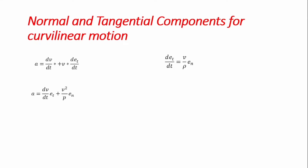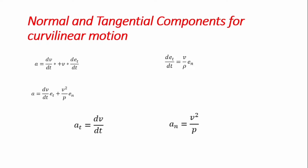Having obtained this, we get the equation for acceleration: a = (dv/dt)·eₜ + (v²/ρ)·eₙ. So we have two components: the tangential acceleration aₜ = dv/dt (the part in the direction of the tangent), and the normal acceleration aₙ = v²/ρ (the part in the direction of the normal). The tangential acceleration is the acceleration along the curve path, while the normal acceleration tends to drag the body towards the center of the circle. These two components sum to form the total acceleration.